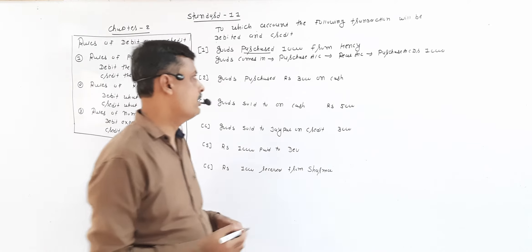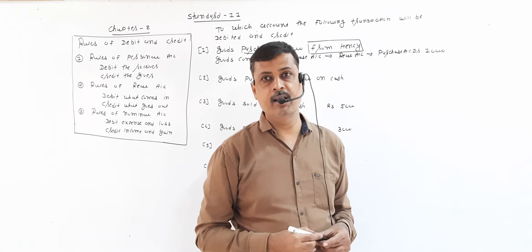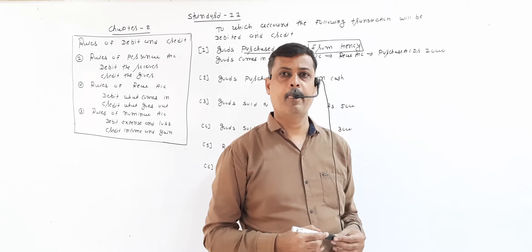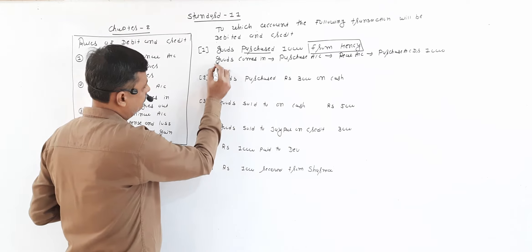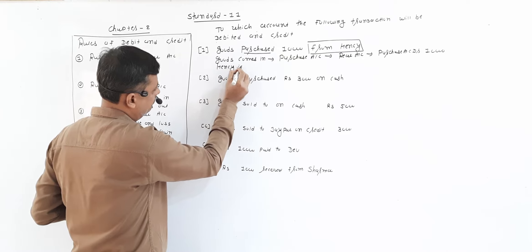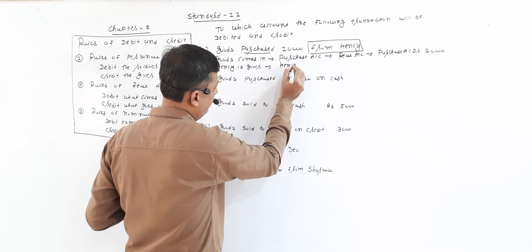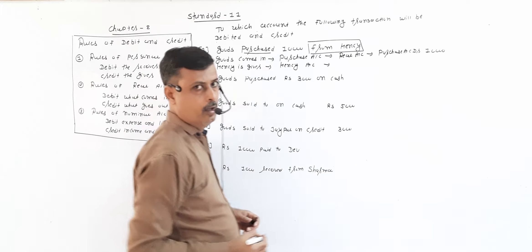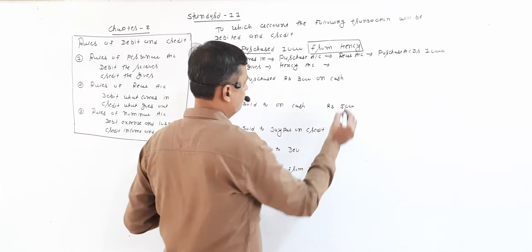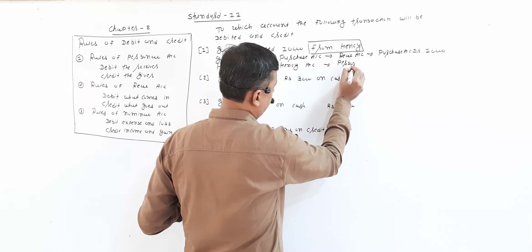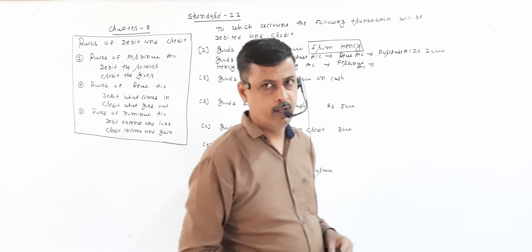This goods was purchased from Hensi. In this transaction a personal name is given, which suggests this is a credit transaction. When you purchase goods from Hensi, Hensi becomes the giver. Hensi is given, so Hensi account is affected. Hensi is a natural person, so this is a personal account. As per personal account rules — credit the giver — so Hensi account is credited.